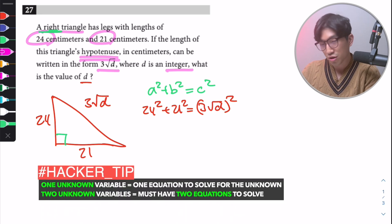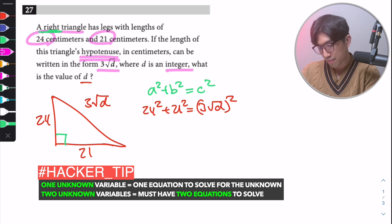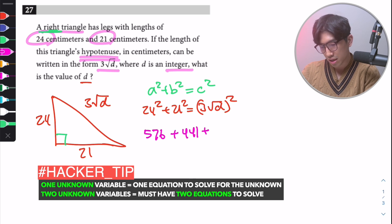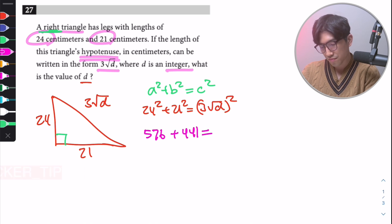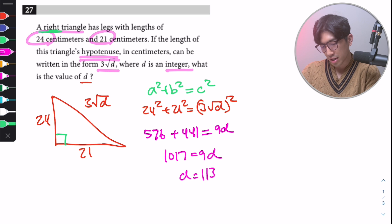So 24² + 21² = (3√D)². You can use a calculator: 576 + 441 = 9D. When we expand and combine, we get 1017 = 9D, so D = 113.